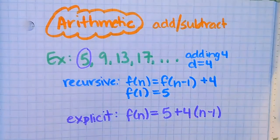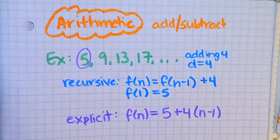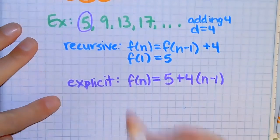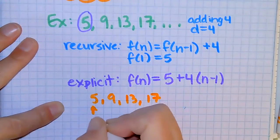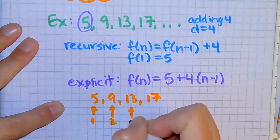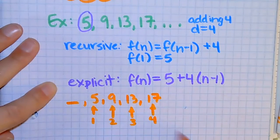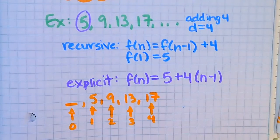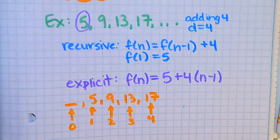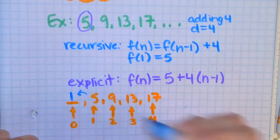For example, let's say I wanted to go backwards and figure out my zero term. If I went backwards from 5, 9, 13, 17 — where five is my first term, nine is my second, 13 is my third, 17 is my fourth — the term in front of that would be my zero term. Going forward I'm adding four, going backwards I'm subtracting four. So that would be one. That is the zero term.